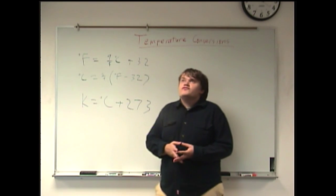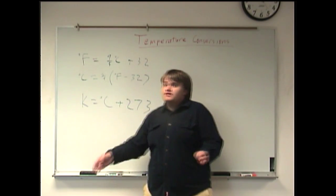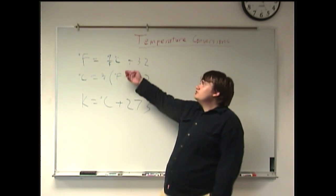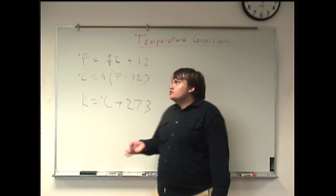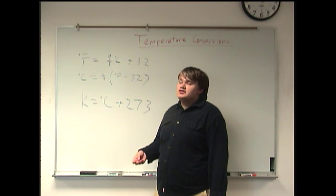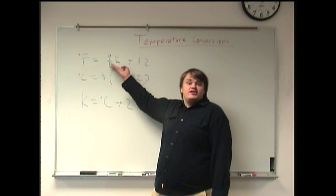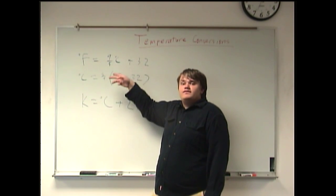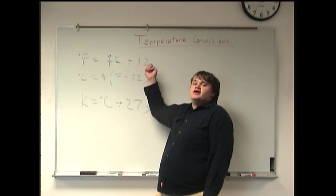Say we want to go from Celsius to Fahrenheit. We're going to go with this one. In order to get Fahrenheit from Celsius, you just multiply the Celsius temperature by 9/5, and then add 32 to that.